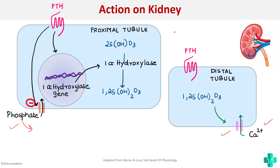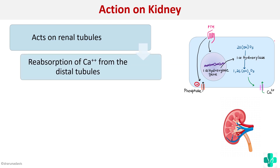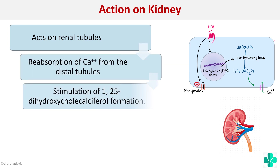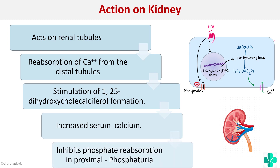So parathormone increases calcium reabsorption directly, and also stimulates conversion of vitamin D to further enhance calcium reabsorption — two methods by which it acts on the kidney. To summarize: it increases calcium reabsorption from distal tubules, stimulates formation of 1,25-dihydroxycalcitriol, and inhibits phosphate reabsorption in the proximal tubule, causing phosphaturia.